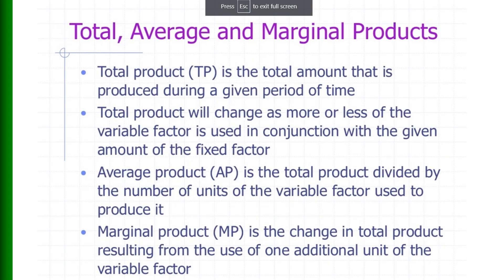Total product is the total amount of output produced during a given period of time. Total product will change as more or less of the variable input is used in combination with a given amount of the fixed factor. Average product (AP) is the total product divided by the number of units of the variable input used to produce it. Marginal product (MP) is the change in total product resulting from the use of an additional unit of the variable factor.